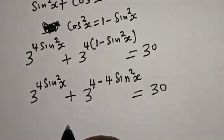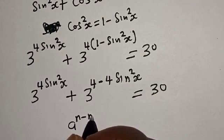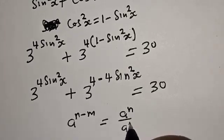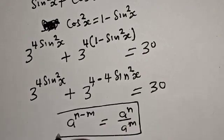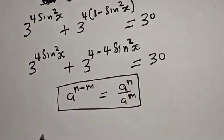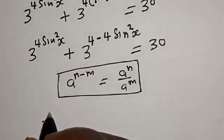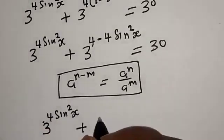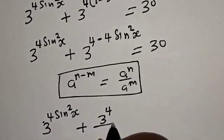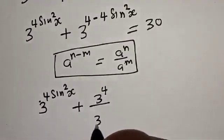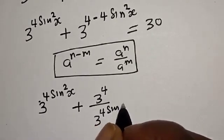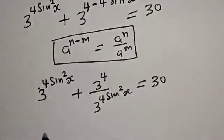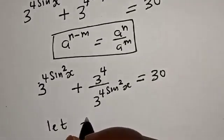Now let's apply the rule that a raised to power (n minus m) equals a raised to power n over a raised to power m. So we can rewrite 3 raised to power (4 minus 4 sine squared x) as 3 raised to power 4 divided by 3 raised to power 4 sine squared x. Now let y equal 3 raised to power 4 sine squared x.